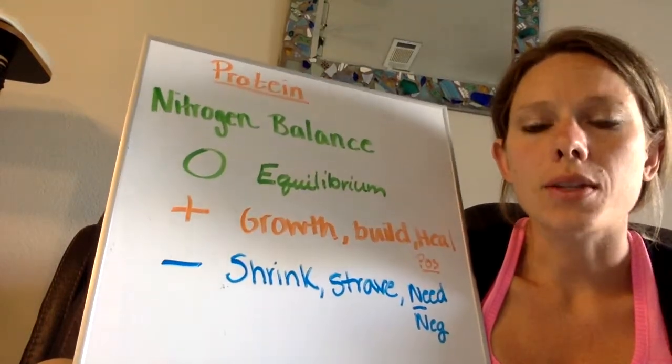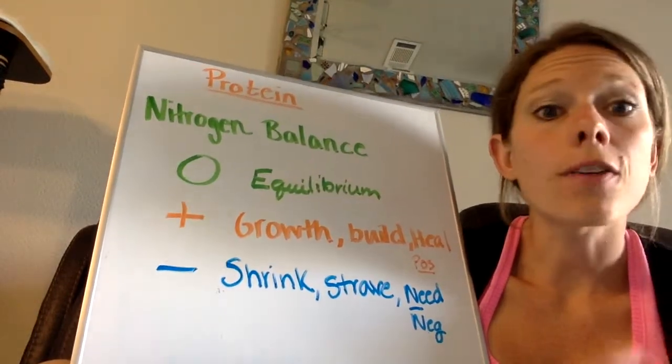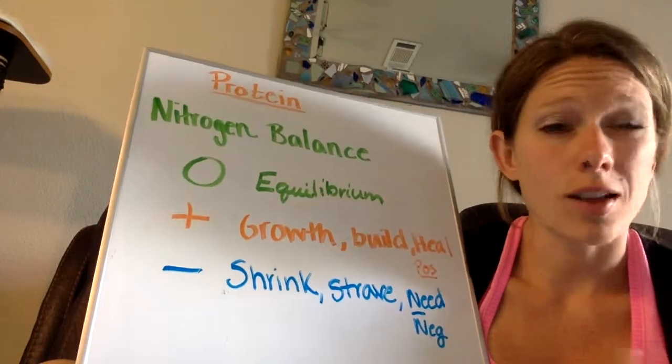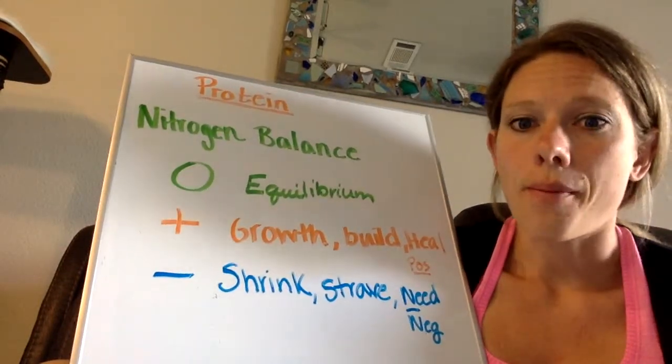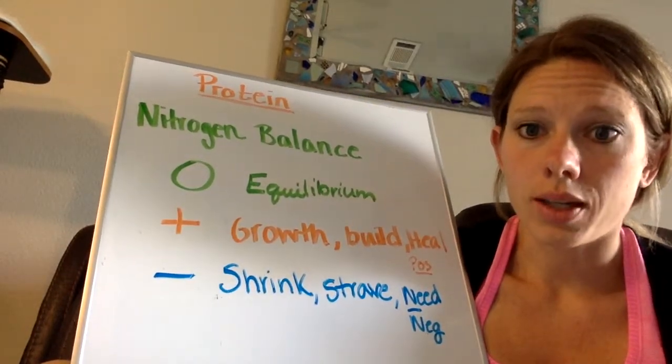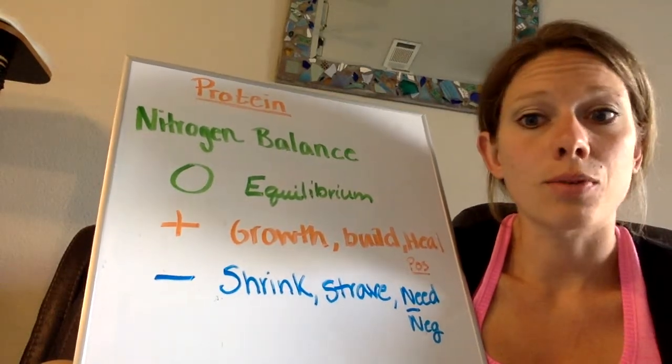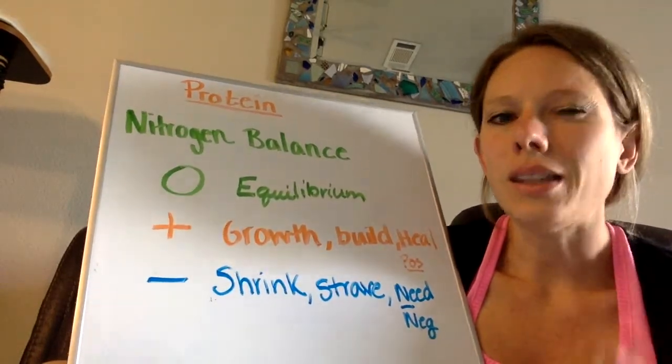So some examples of that might be an infant or child, teenager, lots of growth going on there. That's positive nitrogen balance. Pregnancy, another example of growth, or even healing.